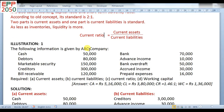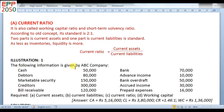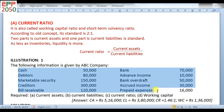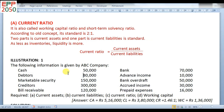Go for an illustration. The following information is given by ABC company: cash, debtors, marketable security, creditors, bills payable, bank, advance income, bank overdraft, accrued income, prepaid expenses. These are some extracted transactions of current assets and current liabilities. From these, we have to find out which are the current assets and which are the current liabilities. The requirements are: current assets, current liabilities, current ratio, and working capital.